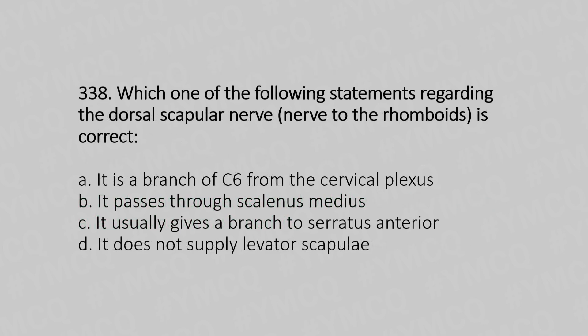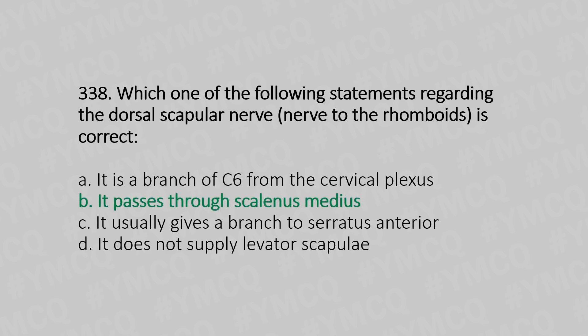Question number 338: Which statement regarding the dorsal scapular nerve (nerve to the rhomboids) is correct? Option A: it is a branch of C6 from the cervical plexus. Option B: it passes through scalenus medius. Option C: it usually gives a branch to serratus anterior. Option D: it does not supply levator scapulae. The answer is option B, it passes through scalenus medius.